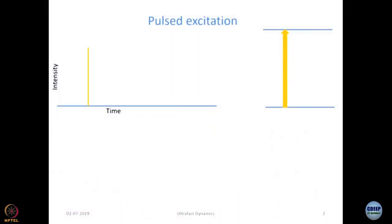When the pulse comes — we are going to call it a pump pulse because it takes the system from a lower energy level to a higher energy level — at that instant some molecules, depending on how strong the pulse is, would get promoted to their excited state. In other words, at that instant excited state population is created, and then the light goes off.